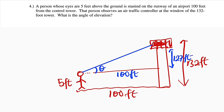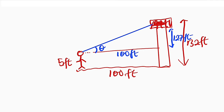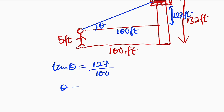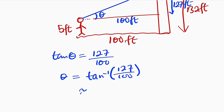So we have a right angle triangle to work with, and we are going to use tangent. Tangent of theta equals the opposite, which is 127, divided by the adjacent, which is 100. To find theta we take tan inverse of both sides, and this is approximately equal to 51.78 degrees.